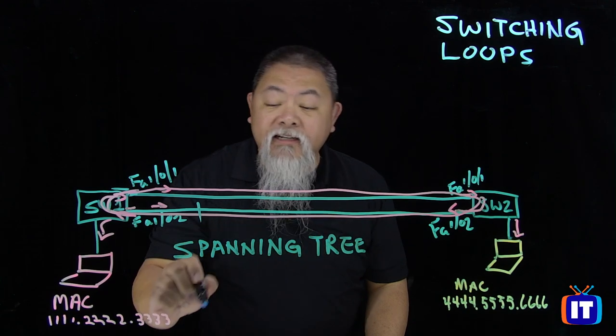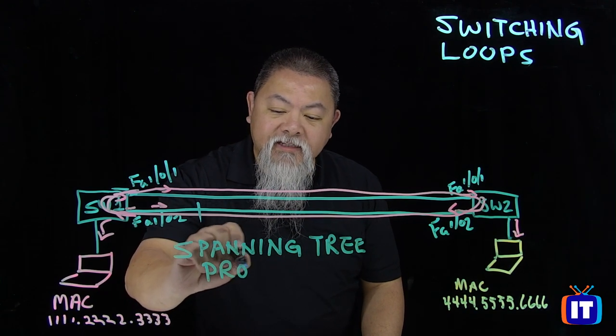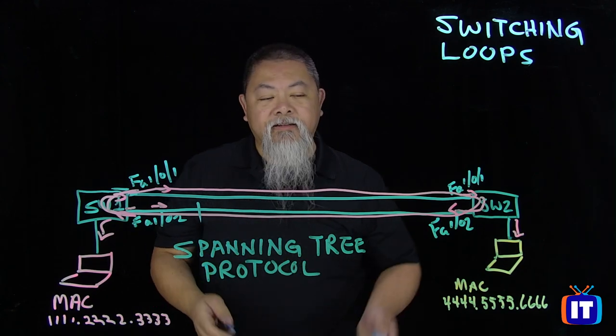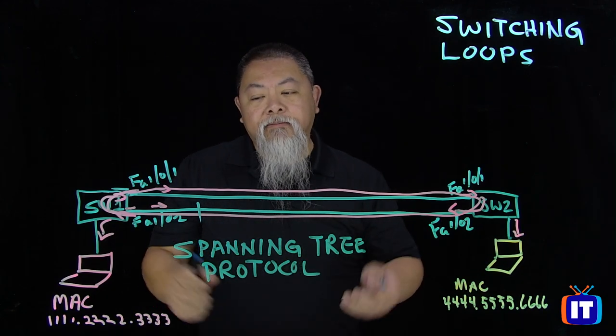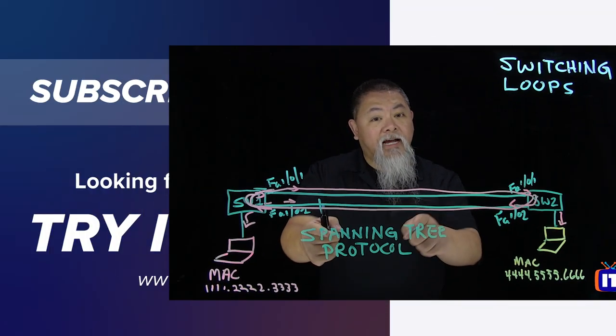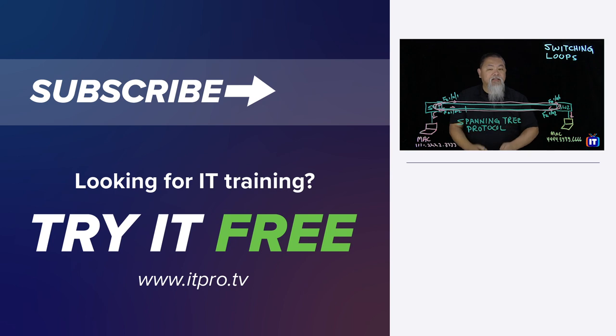And the way that it actually does it is fancy, and it's a bit more of a process than what we're talking about here. But if you can understand the idea of switching loops and what occurs, you can now also understand the need for us having Spanning Tree Protocol, but we'll address that in another video. So thank you for watching.